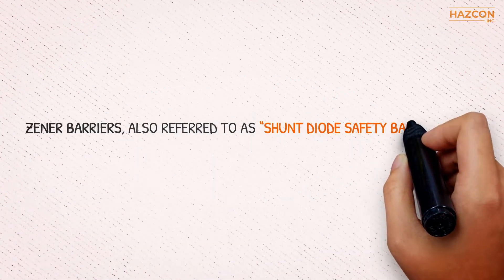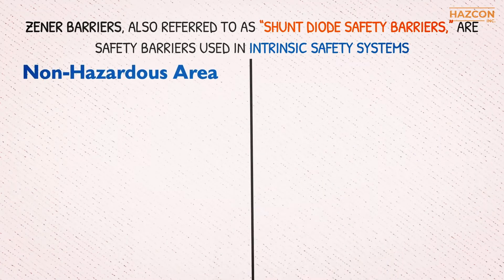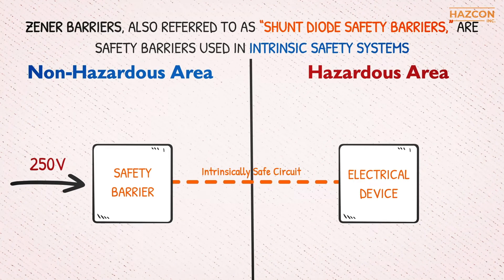Zener barriers, also referred to as shunt diode safety barriers, are safety barriers used in intrinsic safety systems to provide protection for certain electrical devices by limiting the energy going to the hazardous areas.